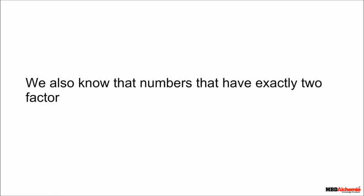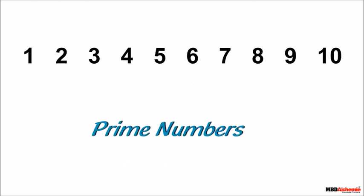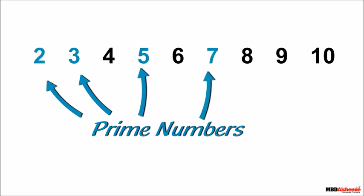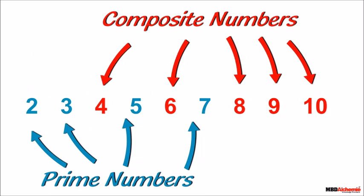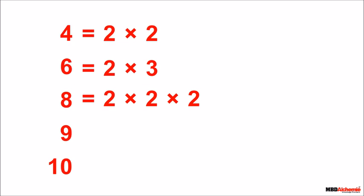Numbers that have exactly two factors, that is one and itself, are called prime numbers. Looking at the first ten numbers: one is neither prime nor composite, so we leave it. Three has two factors, one and three itself, so three is a prime number. Same goes for two, five, and seven. Numbers other than one which are not prime numbers are composite numbers, and all composite numbers can be written as a product of prime numbers. For example, six is two times three, eight is two times two times two, nine is three times three, and ten is two times five.